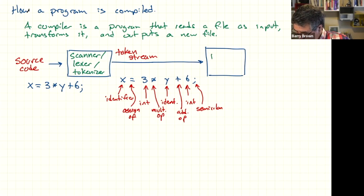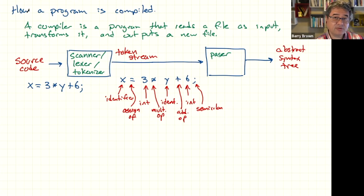So that token stream comes out and then it goes into the next phase. And this is called the parser. The parser's job is to take the token stream and then rearrange it into a data structure called an abstract syntax tree. And so the abstract syntax tree takes the program code and hierarchically organizes it. The other thing the abstract syntax tree also encompasses is the order of operations.